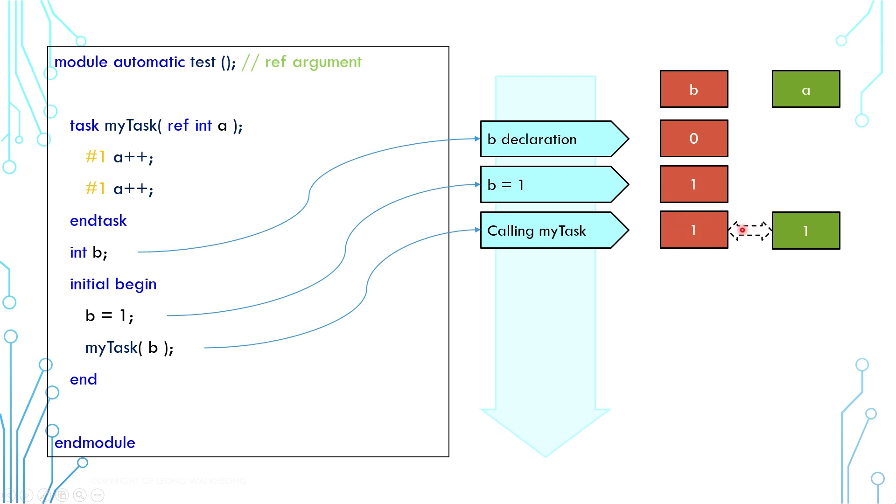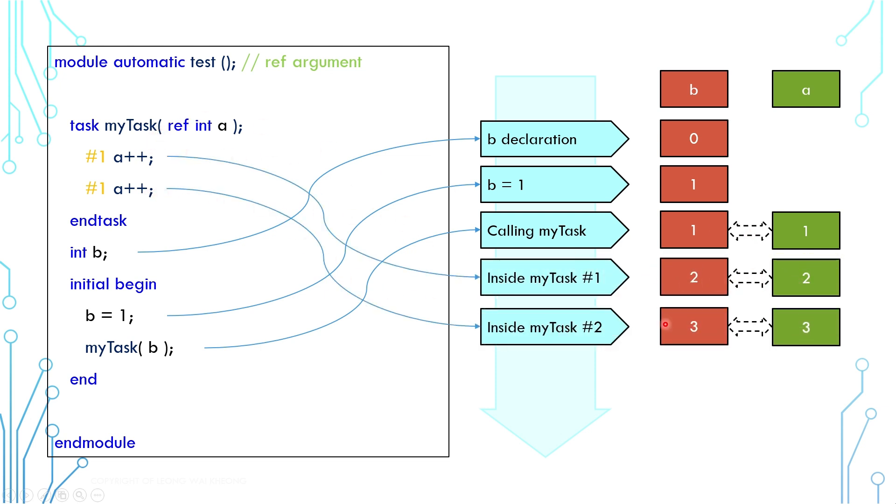Task is called and B is passed as a reference argument. As such argument, A is the same as B. A is incremented to 2 and B follows the same. A is incremented to 3 and B follows the same. Finally, the task ends. The only difference between this and the in-out example is that B knows every single change in the argument A.